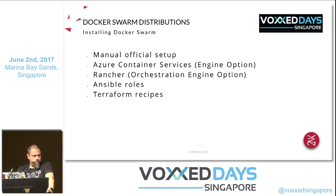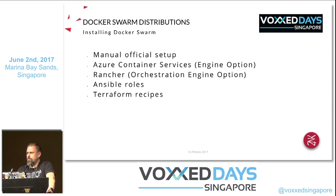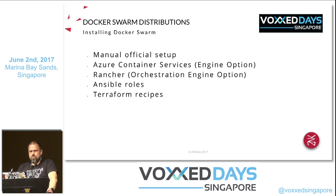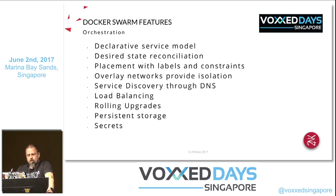Ways to install Docker Swarm: there is the manual official setup using the Docker command line. You can also install Docker Swarm on Azure using Azure Container Services, which lets you choose your orchestrator. All the demos I'll run today are based on Azure Container Services. You can also use Rancher to start a Swarm cluster, or use Ansible roles or Terraform recipes to install it.